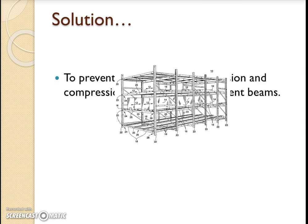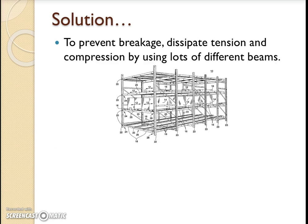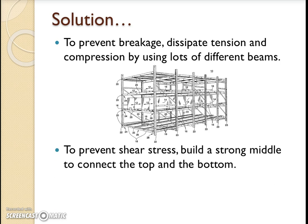So, the solution. What do we do to prevent this? Well, if too much tension and too much compression will cause beams to snap and buckle, we need to make sure that any one individual beam doesn't have too much tension or compression. We need to dissipate the tension in the bottom and the compression in the top by using lots of different beams to share the load. To prevent shear, the logical thing to do would be to build a strong middle that connects the top and bottom and makes sure that the bottom can't go anywhere without taking the top too — or better still, both the bottom and the top stay where they are.